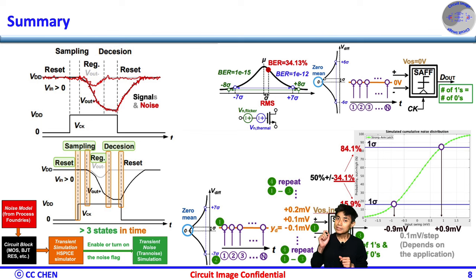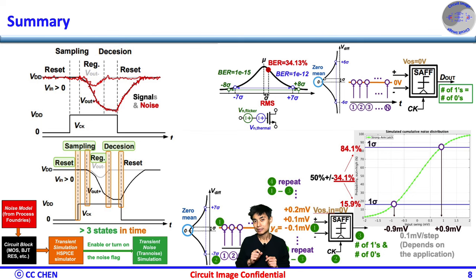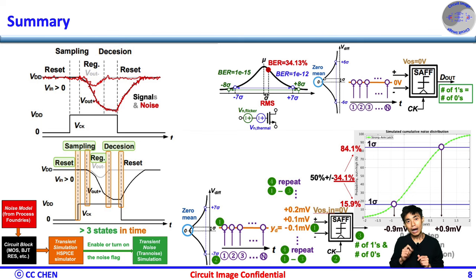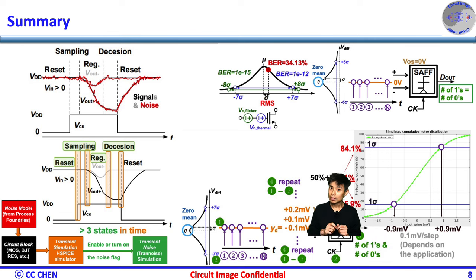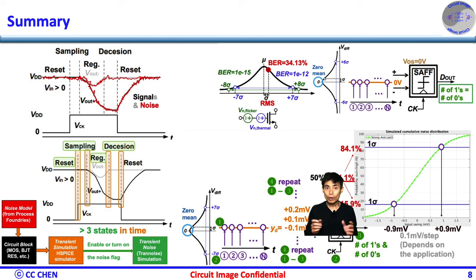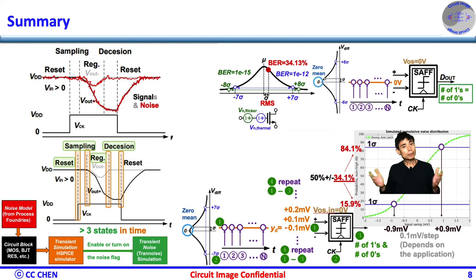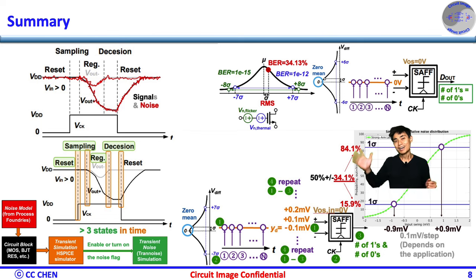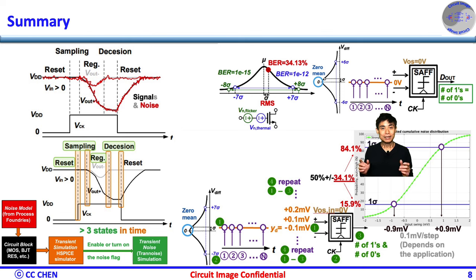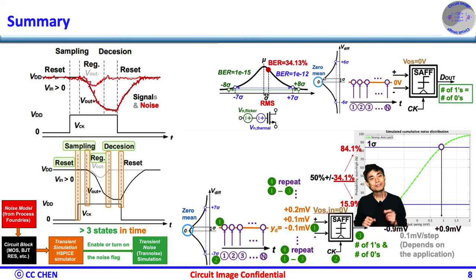The test bench setup steps are: First, apply the 0.1 mV differential input voltage VD. Second, get the sample output decision for at least 10,000 samples. Third, get the probability of logic 1 under the applied +0.1 mV VD at the input. Fourth, repeat the same procedure from one to three, but change VD by +0.1 mV per step. After sweeping all the VD values at 0.1 mV per step, the cumulative distribution function CDF of output logic 1 versus the input swing is obtained. Fifth, identify the RMS noise value by looking at probability equals 84.1% or 15.9% on each side to map the input-referred noise; for example, +0.9 mV or −0.9 mV as the input-referred noise of 0.9 mV.